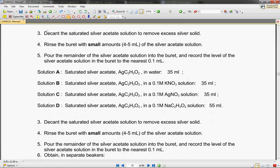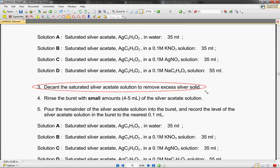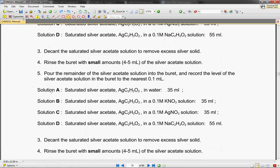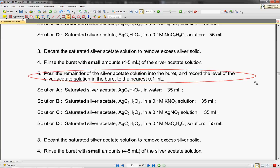And you won't decant it in the burette, you'll decant it with another piece of glassware. So then you'll put that solution into your burette, and you will pour the remaining silver acetate solution into your burette and record the level of the silver acetate.